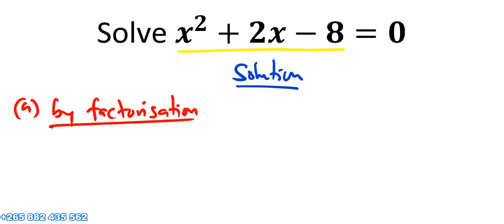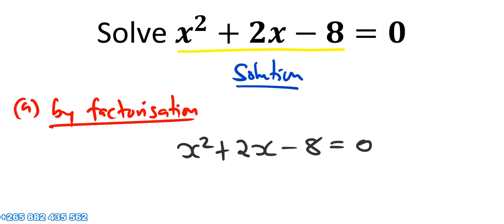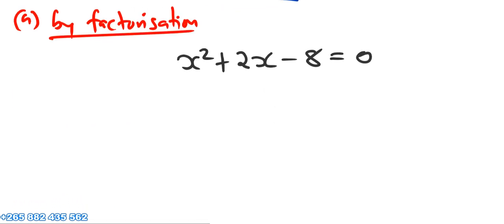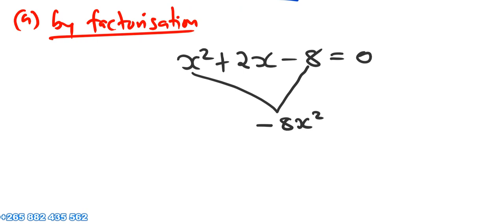So here we have x squared plus 2x minus 8 equal to 0. Remember, the first term times the third term gives us a product of negative 8x squared. The factors must be one negative and one positive number, since only a negative number multiplied by a positive number gives us a negative result.